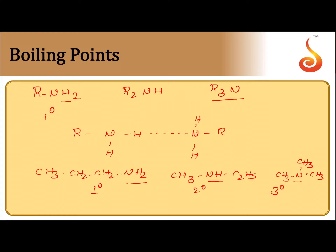Comparing amines to alcohols and carboxylic acids: amines boil at lower temperatures than alcohols and carboxylic acids of comparable molecular mass. The reason is that oxygen is more electronegative than nitrogen, so the extent of hydrogen bonding is greater in carboxylic acids and alcohols — they form stronger hydrogen bonds compared to amines. That concludes the discussion on the boiling points of amines.